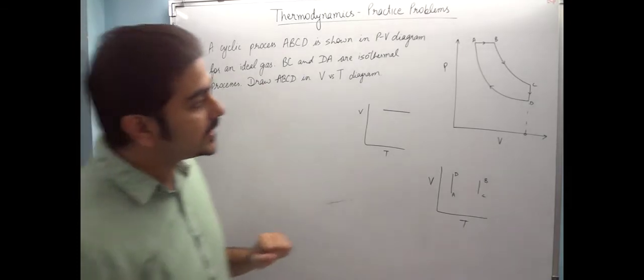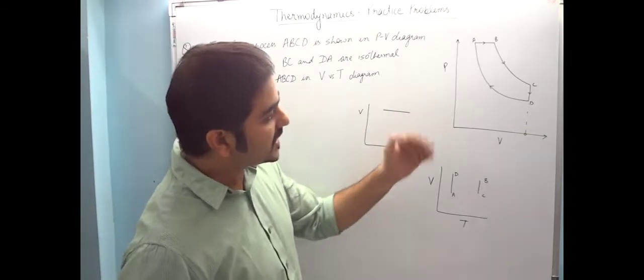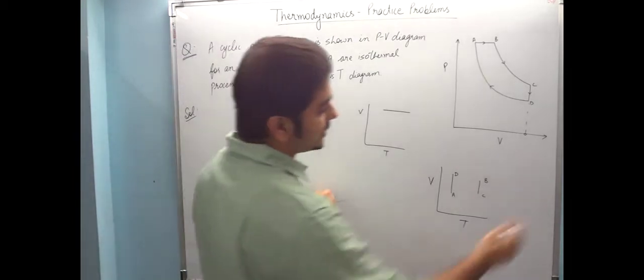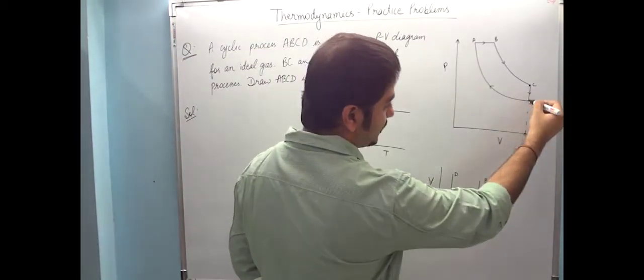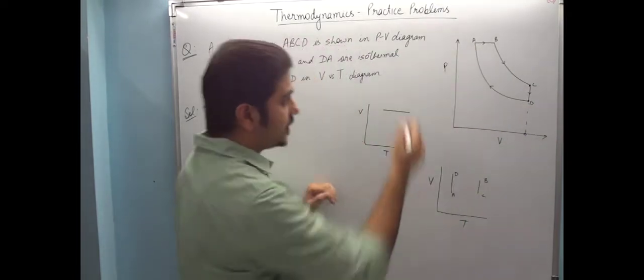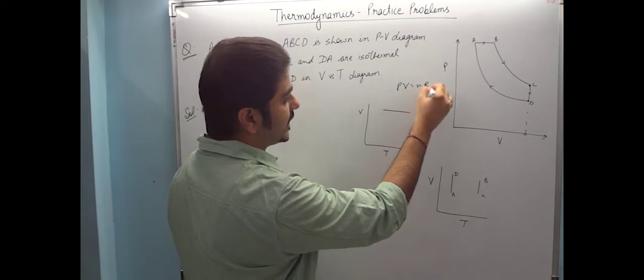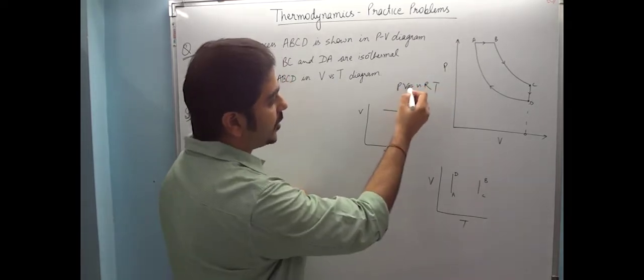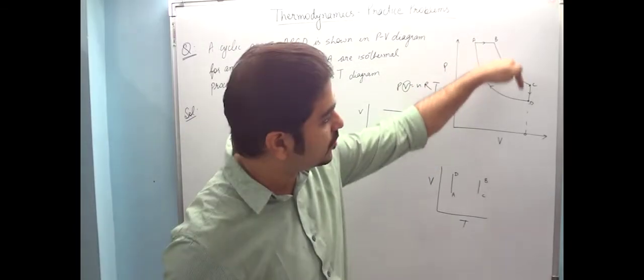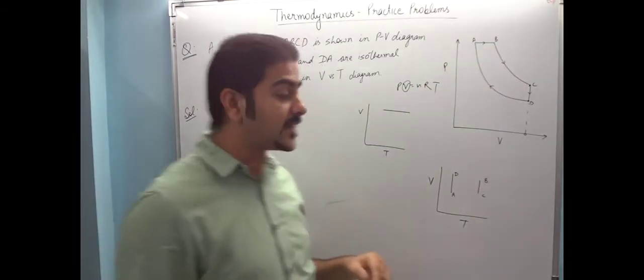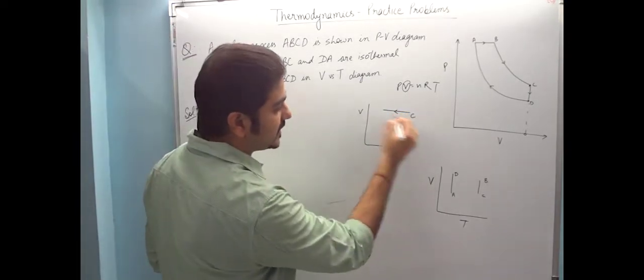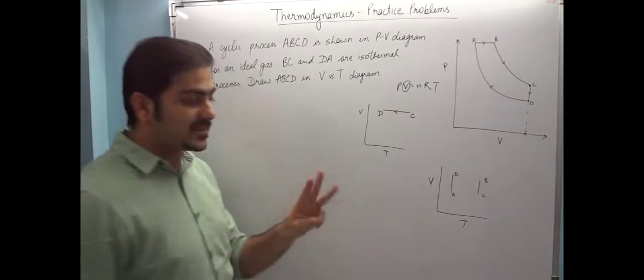But now we have to see that from D to C, volume constant is constant, so what is happening to temperature? As we know PV is equal to nRT. So if volume constant is constant, then pressure is directly proportional to temperature. So if pressure is decreased, then temperature is also decreased. So this means movement is happening.